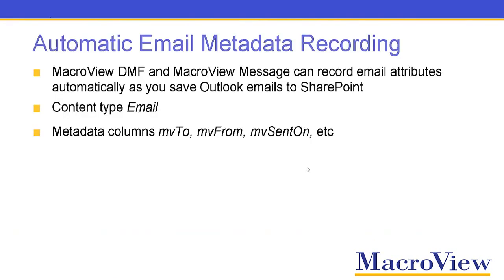As you save an Outlook email to SharePoint, MacroReview DMF and MacroReview Message both look for a content type called Email. If that is available, they will automatically select it without prompting you, even if there are multiple content types in your library. MacroReview will then record the attributes of the email — the to, from, and so on — in columns with internal names such as mv2, mvfrom, mvsenton, and so on.